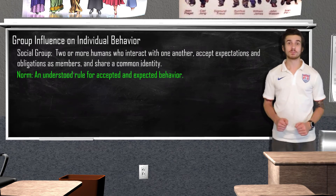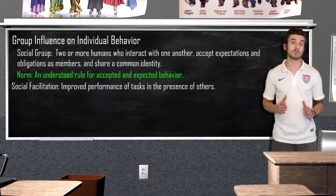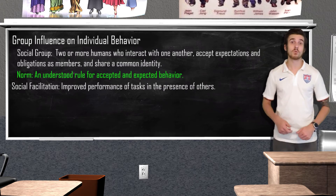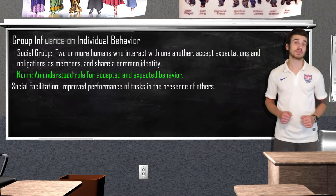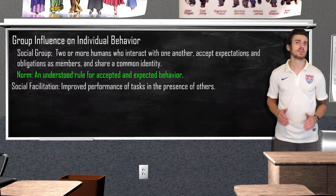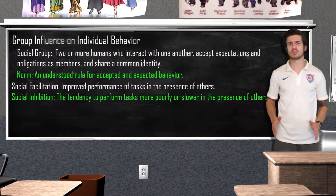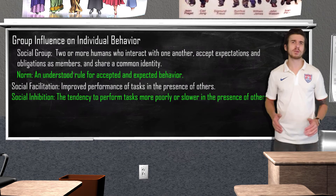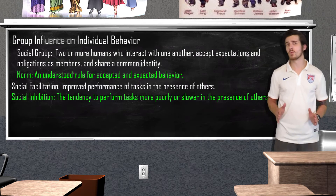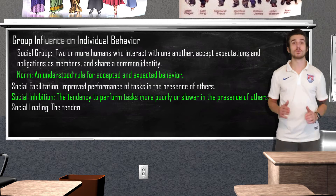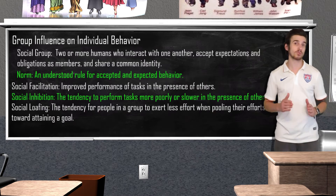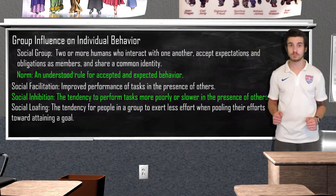Now onto our theories of group influence. Social facilitation refers to an improved performance of tasks while others are watching — this occurs with simple or well-learned tasks, but not with tasks that are difficult or not yet mastered. Social inhibition is the tendency to perform tasks more poorly or slower in the presence of others, generally because someone may not be an expert or has yet to master the task and might be worried or self-conscious about messing up. Social loafing is the tendency for people in a group to exert less effort when pooling their efforts toward a common goal.